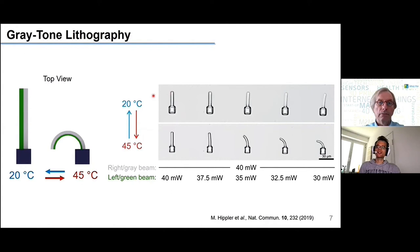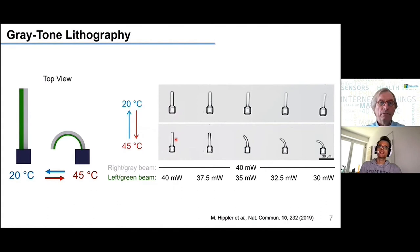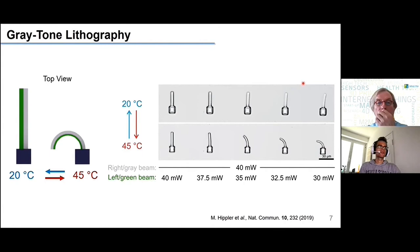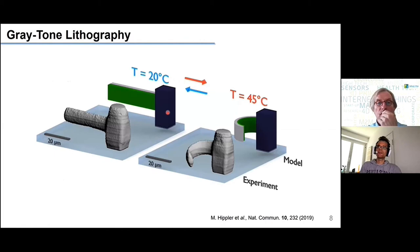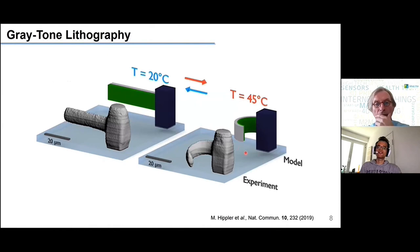We fabricated beams with two parts: left and right. The right gray beam was always fabricated with a laser power of 40 milliwatts, while for the left green beam we varied the laser power from 40 down to 30 milliwatts. When the difference between laser powers is small, you see only a small isotropic shrinkage but no bending. However, as you make the difference larger and larger, more and more pronounced bending to the left-hand side occurs. 3D reconstructions measured via laser scanning fluorescence microscopy confirm this strong bending between the two temperature states.